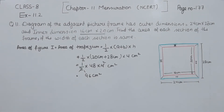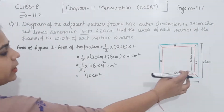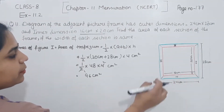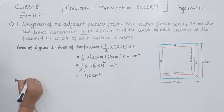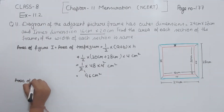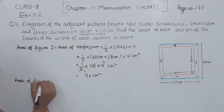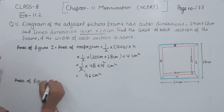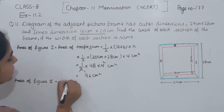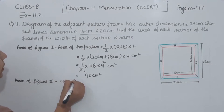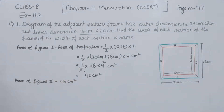Now, the area of figure 1 is equal to the area of figure 2. So the area of figure 2 is also equal to 96 cm².